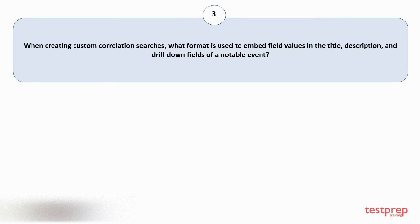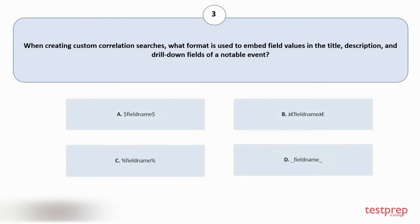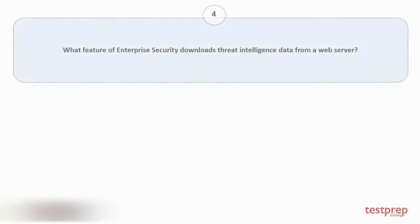Question number three: when creating custom correlation searches, what format is used to embed field values in the title, description, and drill-down fields of a notable event? The correct answer is option C.